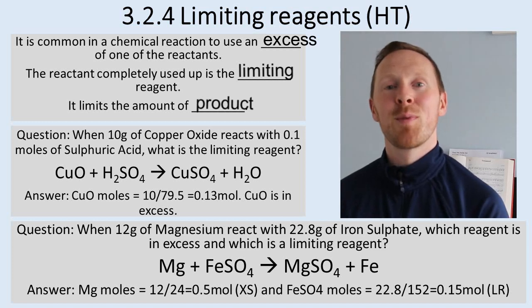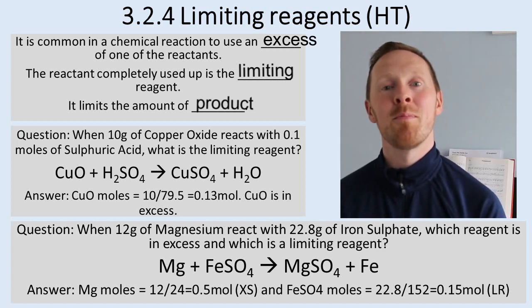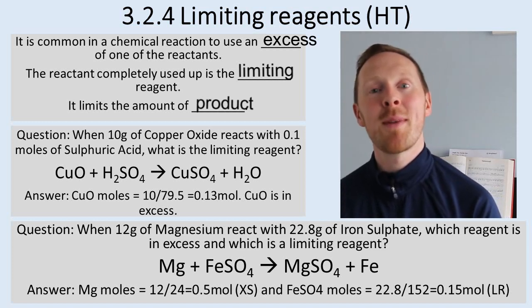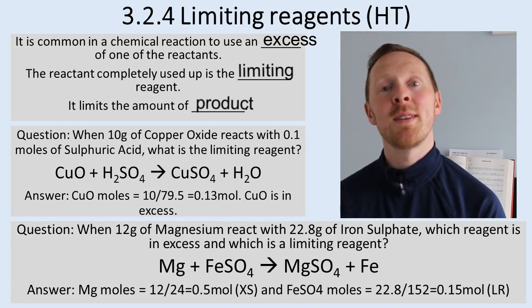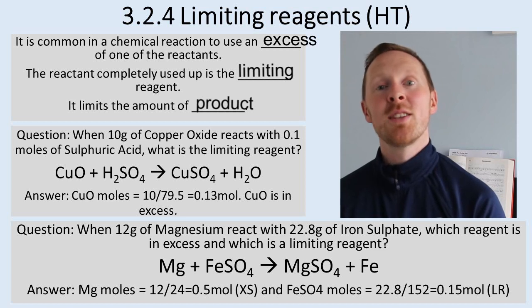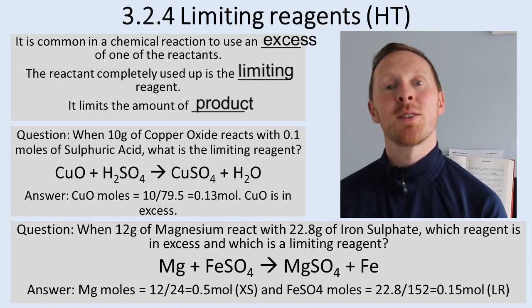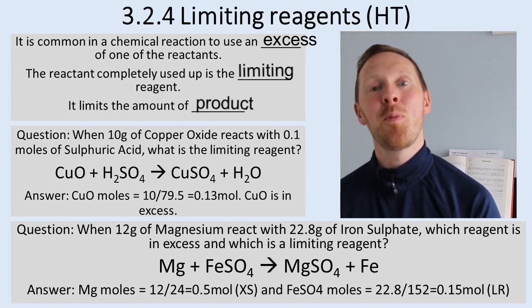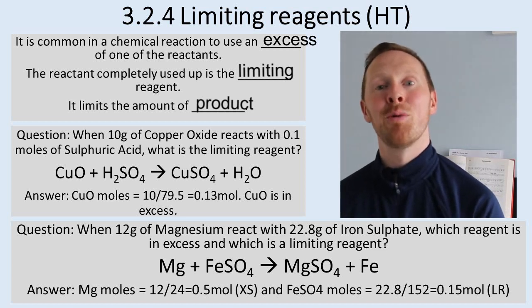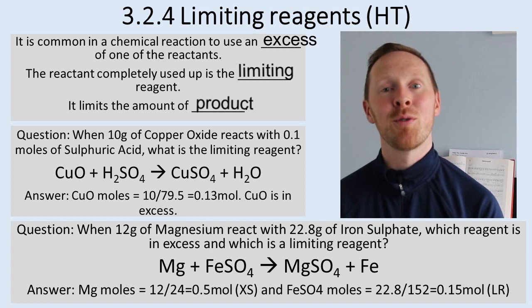For the magnesium we have 12 grams. The relative atomic mass of magnesium is 24, so 12 divided by 24 is 0.5 moles. We've got 0.5 moles of magnesium.